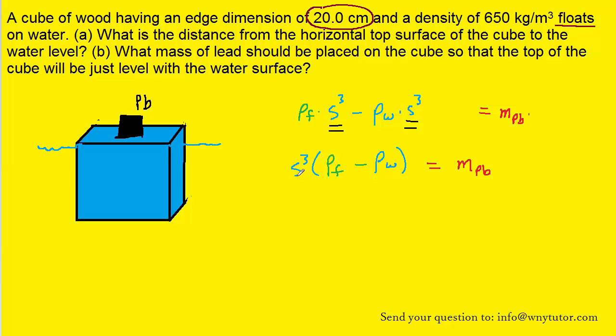We can then fill in the known values for s, which was the side length of the cube, 20 centimeters, the density of the fluid, which is water, and the density of the wood. Notice that we converted s from 20 centimeters to 0.20 meters. The reason we did that is because we want the meters cubed to cancel with the meters cubed found in the densities. So now we can pick up our calculators and process the calculation.